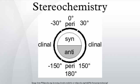Significance. The Cahn-Ingold-Prelog priority rules are part of a system for describing a molecule's stereochemistry. They rank the atoms around a stereocenter in a standard way, allowing the relative position of these atoms in the molecule to be described unambiguously. A Fischer projection is a simplified way to depict the stereochemistry around a stereocenter.